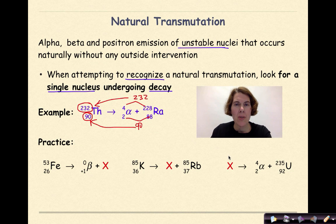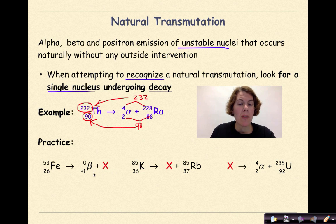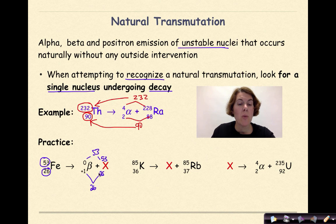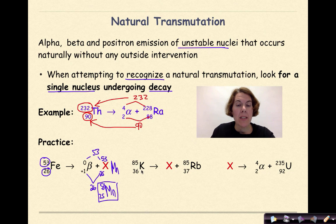Let's look at the first practice problem: iron-53 undergoing positron decay, solving for X. The mass number is 53; since the positron contributes 0, X must also have mass number 53. The atomic number of iron is 26, and 1 plus some other number must equal 26, so X has atomic number 25. The element with mass number 53 and atomic number 25 is manganese, so X is manganese-53.